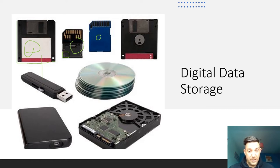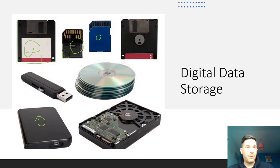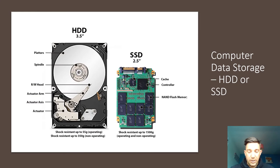We also have a hard disk drive and a solid state drive, and those can be internal or external. An internal one is built into the computer tower, into your laptop, or into your phone and is part of that device. Whereas an external is a hard drive of some sort which can be connected up to a tower or laptop or phone, so that you can move storage data around to different computers. We're only going to look at a couple of these in a little bit of detail.